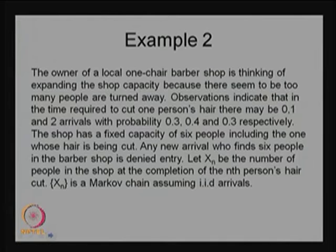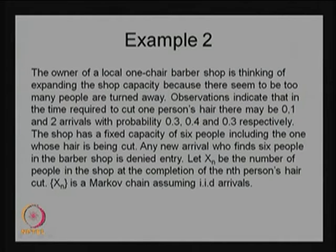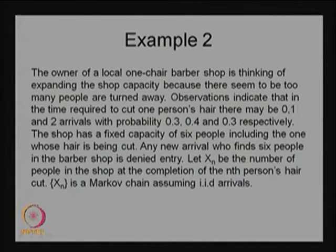Observations indicate that in the time required to cut one person's hair, there may be 0, 1, or 2 arrivals with probability 0.3, 0.4, and 0.3 respectively. So during one person's haircut, no people turn up with probability 0.3, one person with probability 0.4, and two arrivals with probability 0.3. The summation of probabilities is 1, and these are the only three possibilities.